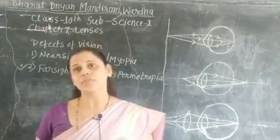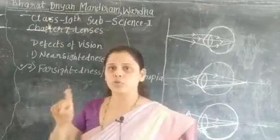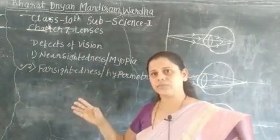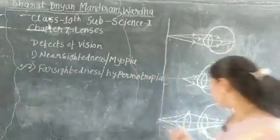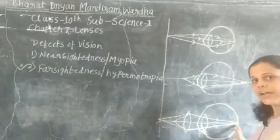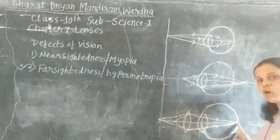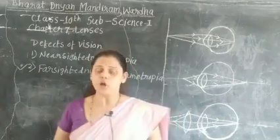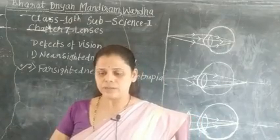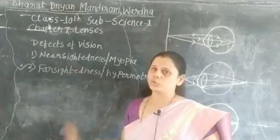This defect can be corrected by using a convex lens. In nearsightedness we use a concave lens, but in farsightedness we use a convex lens. This is a converging lens — using these spectacles, the image is formed on the retina and the human eye can see a clear image. The defect is corrected using a convex lens with a proper focal length, which depends on the magnitude of the farsightedness.